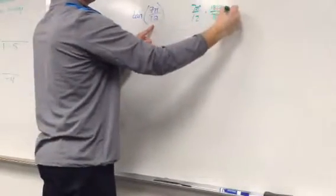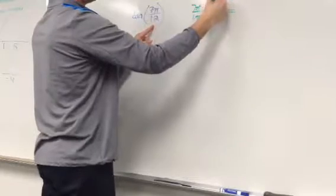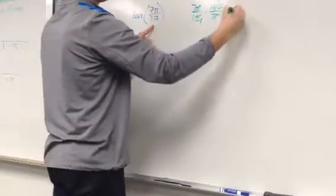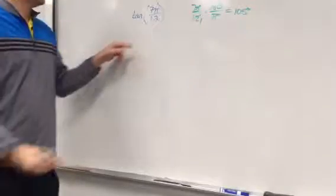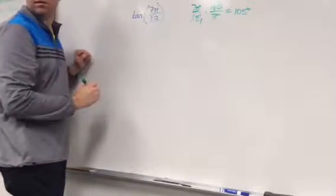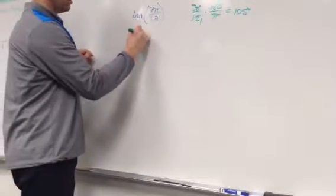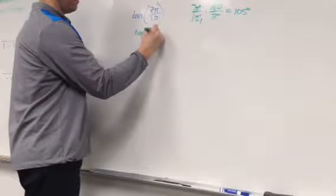Pi is cancelled. 12 goes into there 15 times. 7 times 15 is 105. So really, I'm doing the tangent of 105 degrees.